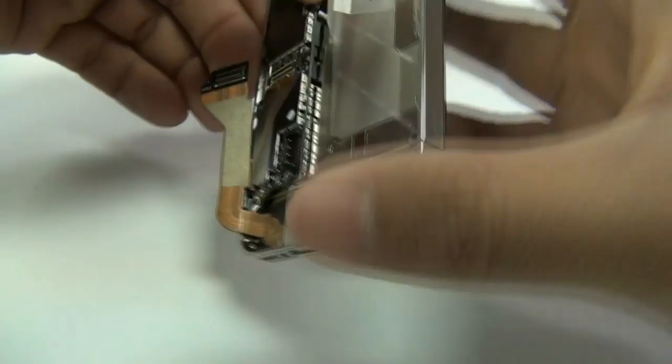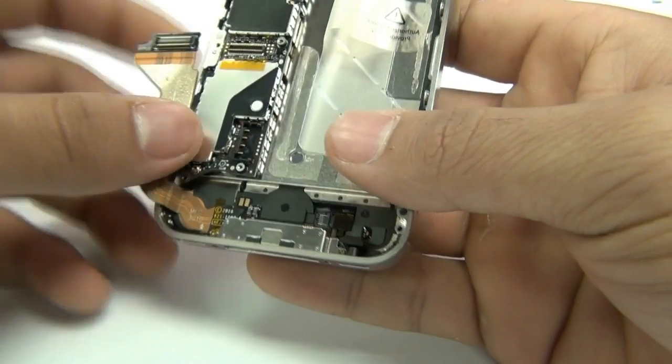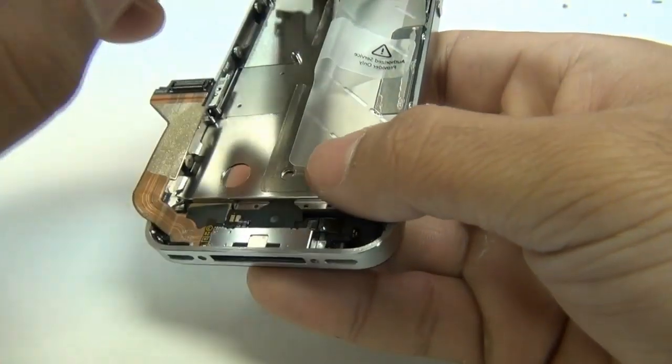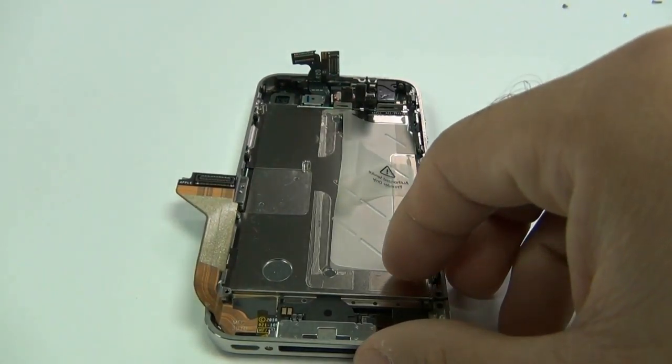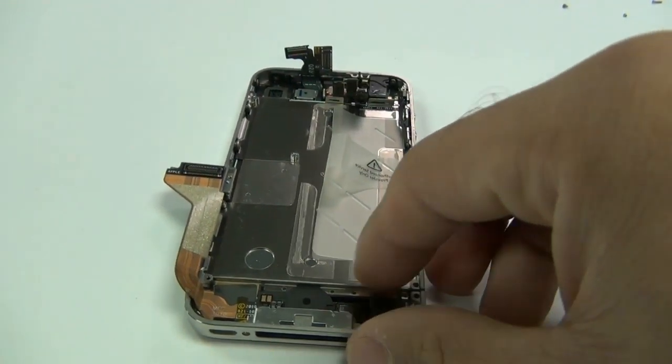With all of the screws on the logic board removed and the SIM tray removed as well, you can remove the logic board from the midframe assembly. Please place the logic board in an electrostatic device safe area.